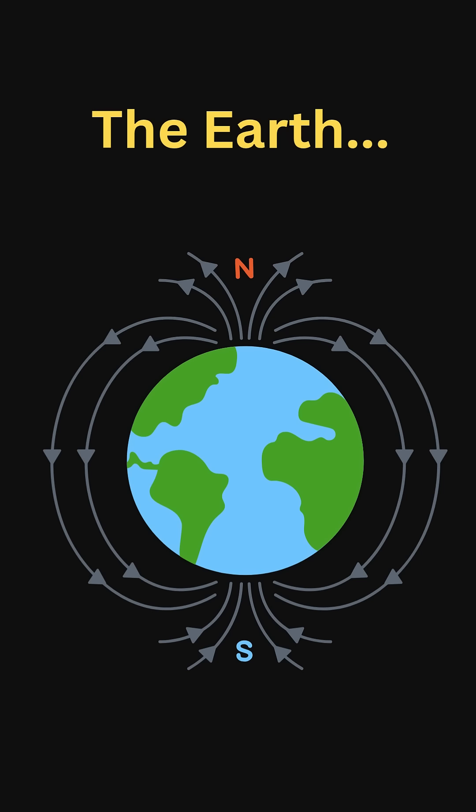Here is a fun fact. The Earth itself behaves like a giant magnetic dipole, tilted about 11 degrees from its rotational axis.